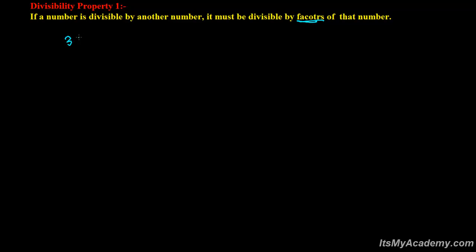For example, take the number 36. If 36 is divisible by 12 — you can choose any number, suppose 12 — then 36 divided by 12: we know 12 times 3 is 36. So the remainder is 0, meaning 36 is perfectly divisible by 12.